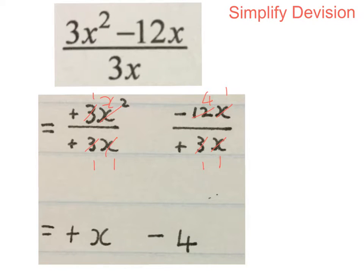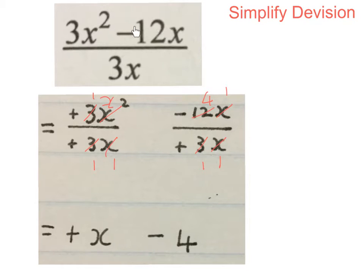Later on you can do this division in your mind without showing all the calculations. Divide this term: plus divided by plus gives you a plus with an X. Divide the other term: minus divided by plus is a minus, and cancelling gives you a 4. Please practice using the written-out steps in the beginning.